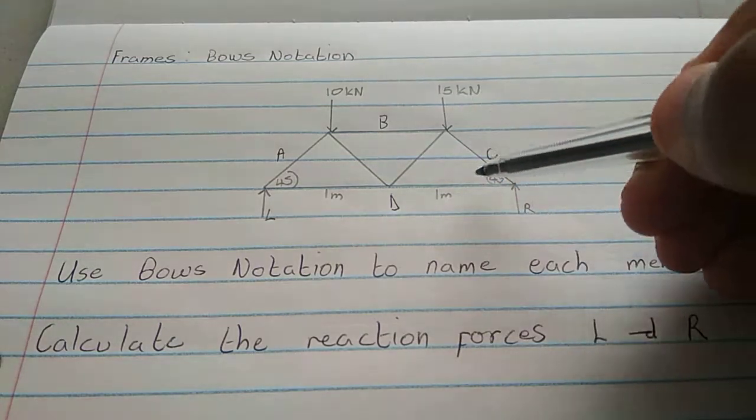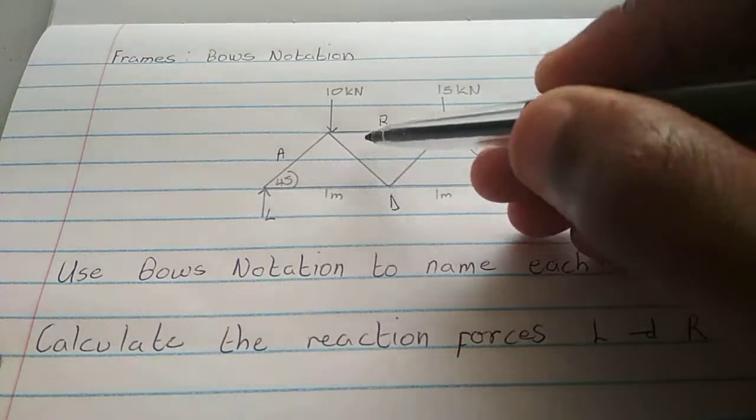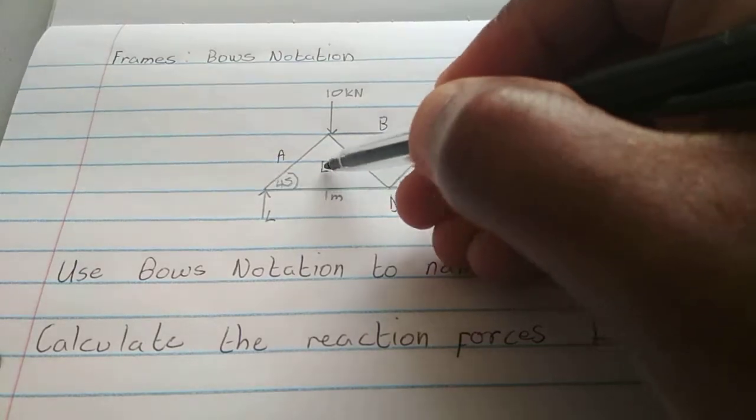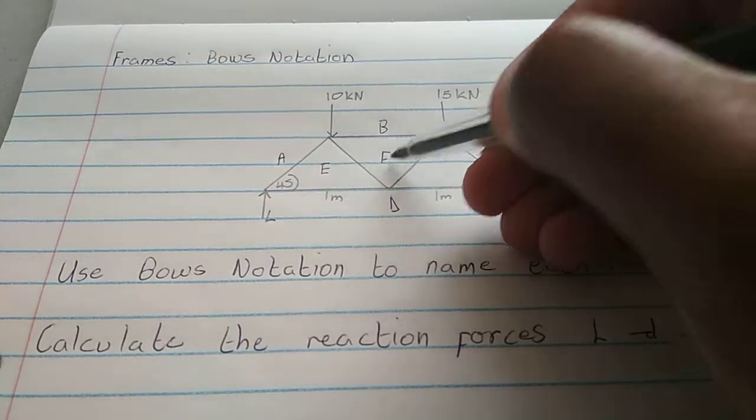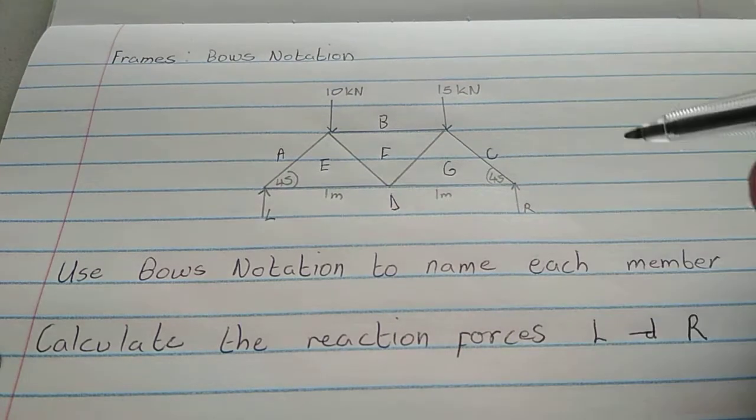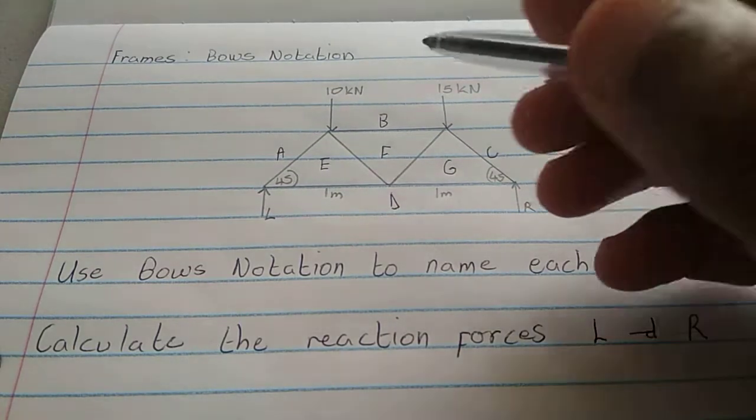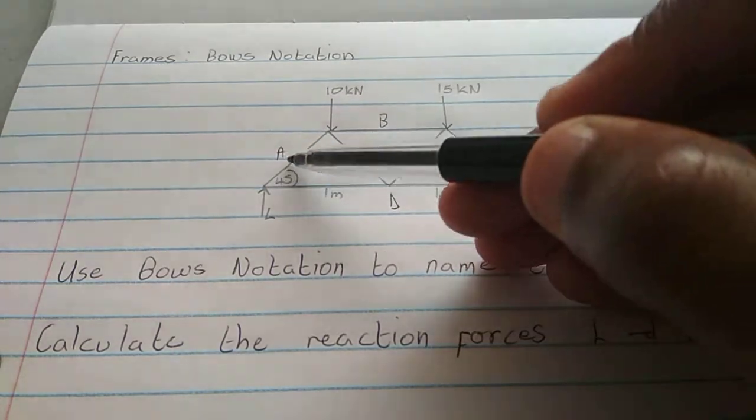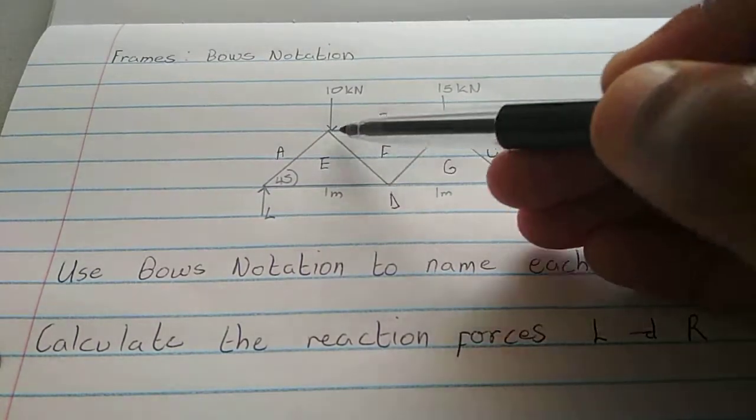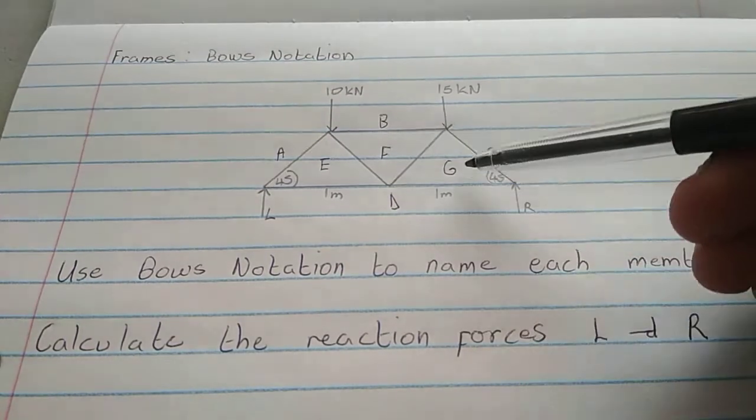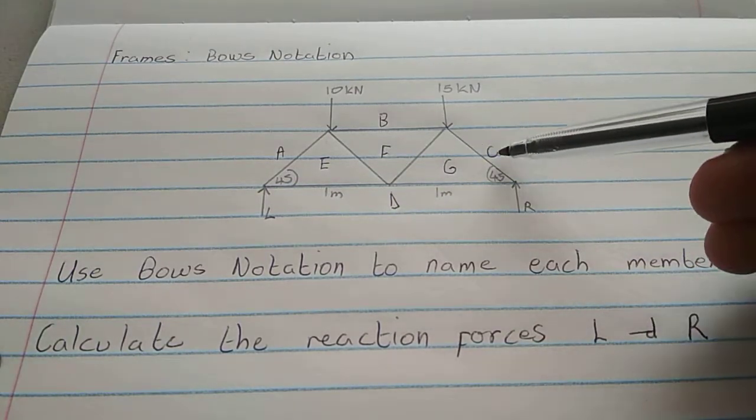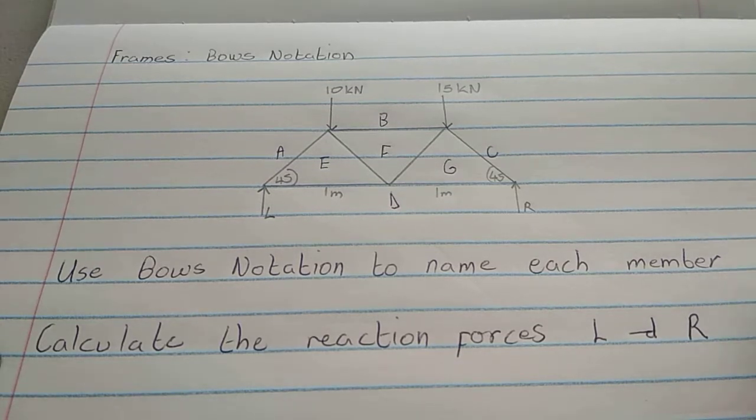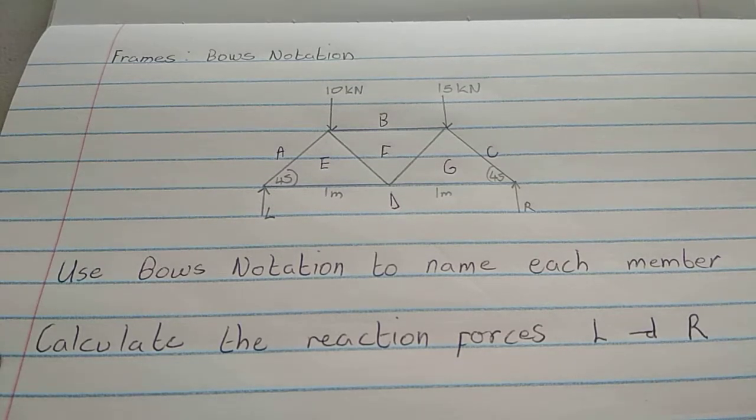And now, remember because we are going in a clockwise direction like a spiral, this one here, we're going to name it E, F, G. Such that each member will be two letters. So, this member here is going to be AE. This member here is BF. This member here is CG, and so on. We are done with the Bow's notation.